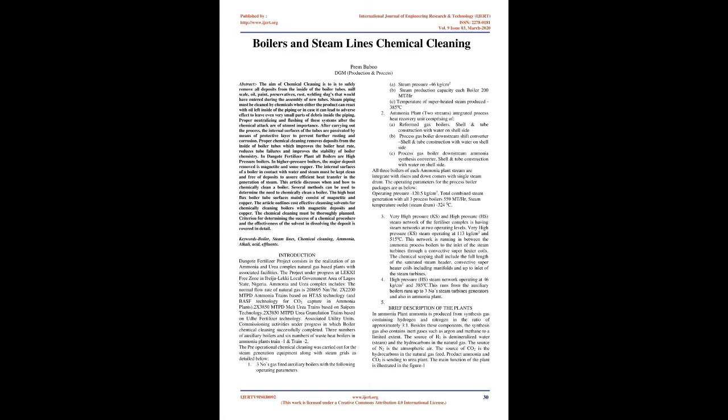Deposits include mill scale, oil, paint, preservatives, rust, and welding slags that would have entered during the assembly of new tubes. Steam piping must be cleaned by chemicals when either the product can react with oil left inside of the piping, or in case it can lead to adverse effects to leave even very small parts of debris inside the piping. Proper neutralizing and flushing of these systems after the chemical attack are of utmost importance.